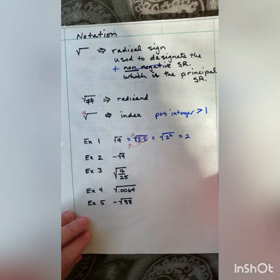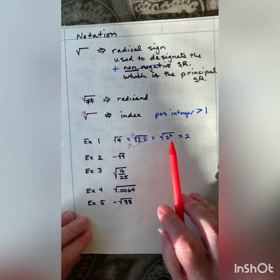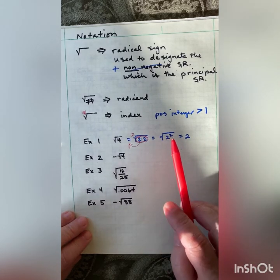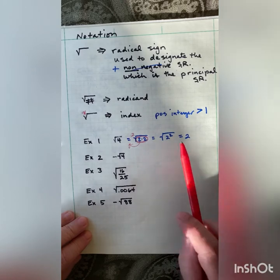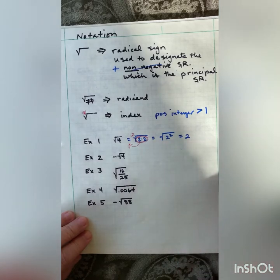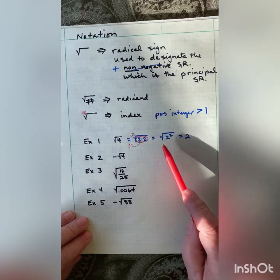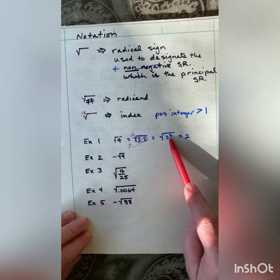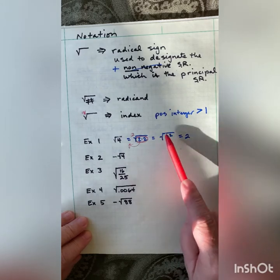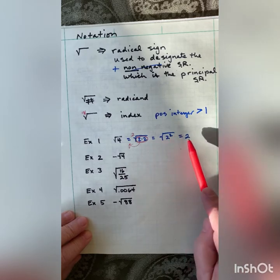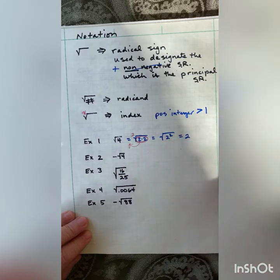Squaring and square roots are opposite operations, and they undo each other. So anytime I'm taking a square root of something that has been squared, they undo each other and I'll be left with that.